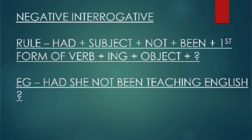Negative Interrogative rule: Had plus subject plus not plus been plus first form of verb plus ing plus object plus question mark. Example: Had she not been teaching English?